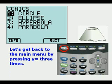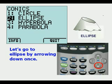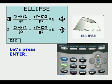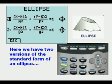Let's get back to the main menu by pressing Y equals 3 times. We get to this menu and we're going to scroll down once to ellipse and press Enter. And we see this view.